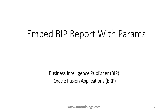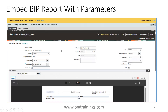Hello all, welcome to ratraines.com. In this session we'll discuss how to embed a BIP report with parameters in Oracle Fusion ERP. Let's see what the expected output looks like first. Here you can observe this is the AP Invoice page in Oracle Fusion, and here you can see a supplier report displaying data based on the vendor provided.